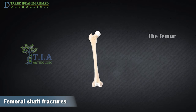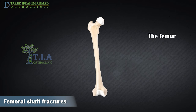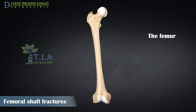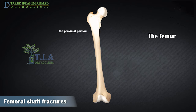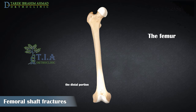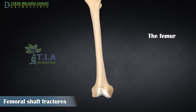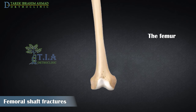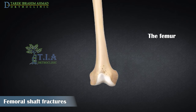The femur is the longest and strongest tubular bone in the human body and one of the principal load-bearing bones in the lower extremity. The femoral shaft can be divided into three parts: the proximal portion, including the femoral head and neck and the intertrochanteric area; the middle portion involving the femoral shaft; and the distal portion, including the supracondylar area. The distal femur broadens from the cylindrical shaft to form two curved condyles separated by an intercondylar groove, the medial condyle and the lateral condyle.